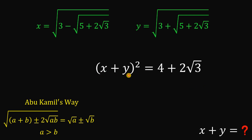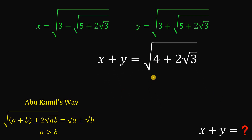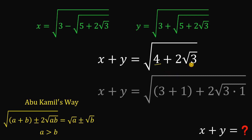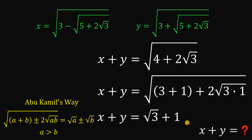Now we solve for the value of x plus y by taking the square root on both sides. Take note: x is greater than 0 and y is also greater than 0, so the sum of x and y is also greater than 0, and we don't consider the negative value. Let's focus on this result and use the Abu-Kamil sway again, because 4 is 3 plus 1 and 3 is 3 times 1. Using the Abu-Kamil sway, we simplify this as square root of 3 plus square root of 1, which equals square root of 3 plus 1. So the value of x plus y is simply square root of 3 plus 1.